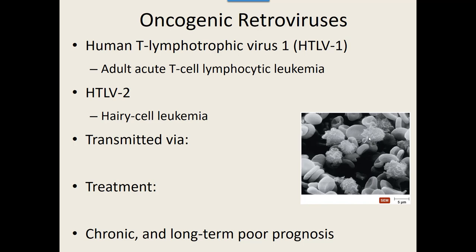We don't have any treatment for our oncogenic retroviruses — we can do various types of chemotherapy, but unfortunately that's not getting rid of the viruses. Usually the prognosis is poor long-term; it's almost impossible to get rid of both the virus and the cancerous cells. Your best bet is to not get it in the first place: monogamous sex, no needle sharing, testing blood before any transfusions, anything just to not pick up the virus. Luckily there are not a lot of cases of these viruses, but they are out there.